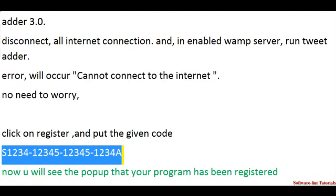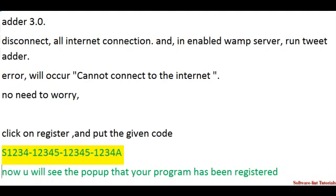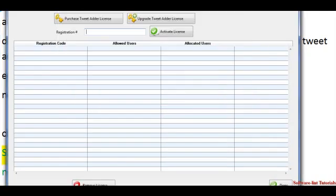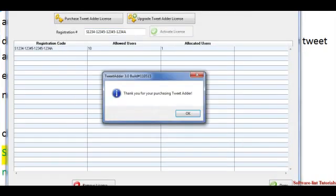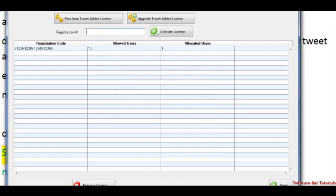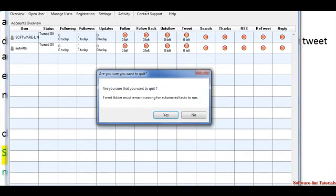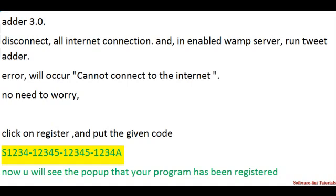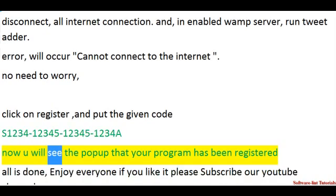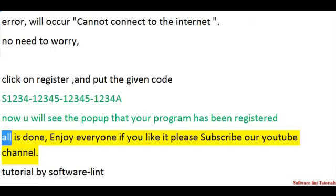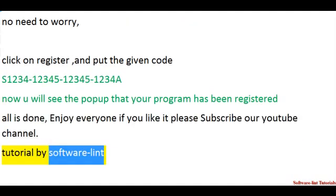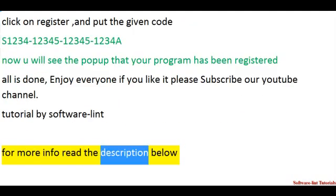Enter the registration code: 1234-12345-12345-1234-8. You will see a pop-up that your program has been registered. All done — enjoy! If you liked it, please subscribe to our YouTube channel, Tutorial by Software Lint, and for more info read the description below.